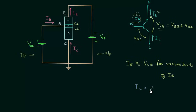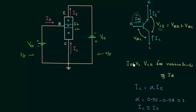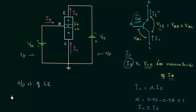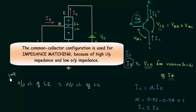We know IC is equal to alpha times IE, and alpha ranges from 0.95 to 0.98, which is nearly equal to 1. So we can say that the collector current is nearly equal to the emitter current, and we can replace the emitter current with the collector current. The graphical relation between IC and VCE for various levels of IB is nothing but the output characteristics of the common emitter transistor. So for all practical purposes, the output characteristics of the common emitter transistor are similar to those of the common collector transistor. This is a very important point.